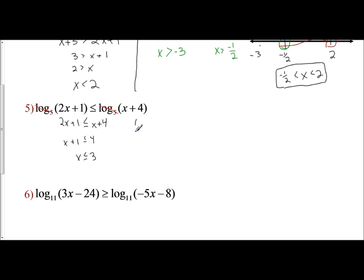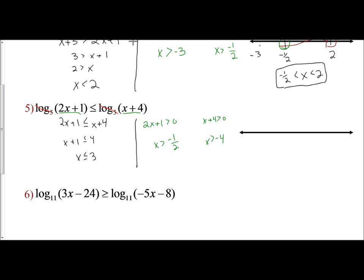So we have to check our boundaries — again, there are going to be 2. The first one is where 2x plus 1 is greater than 0: subtract 1 and divide by 2, so x is greater than negative 1 half. The next one is where x plus 4 is greater than 0, which means x is greater than negative 4. If we look at these on a number line and mark our solution x is less than or equal to 3 — a closed circle on 3 with an arrow to the left — which boundary stops this first?